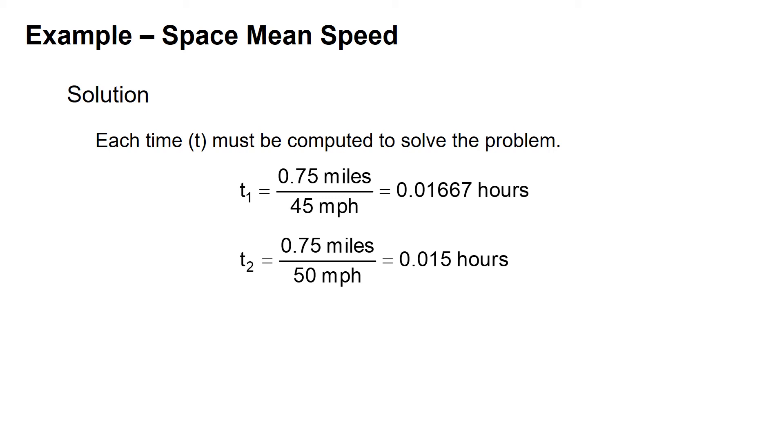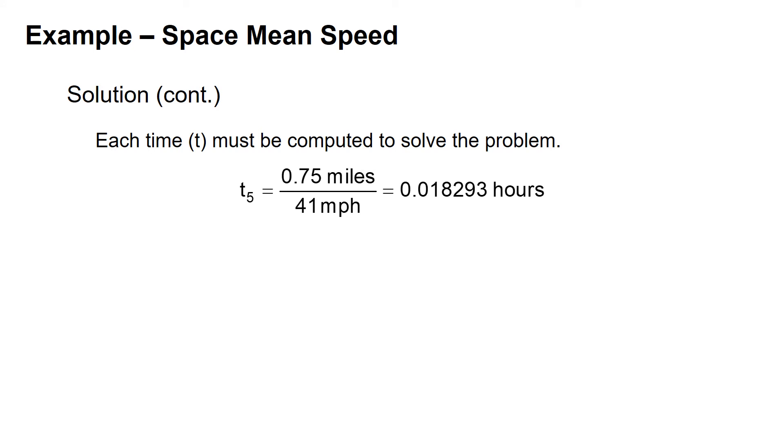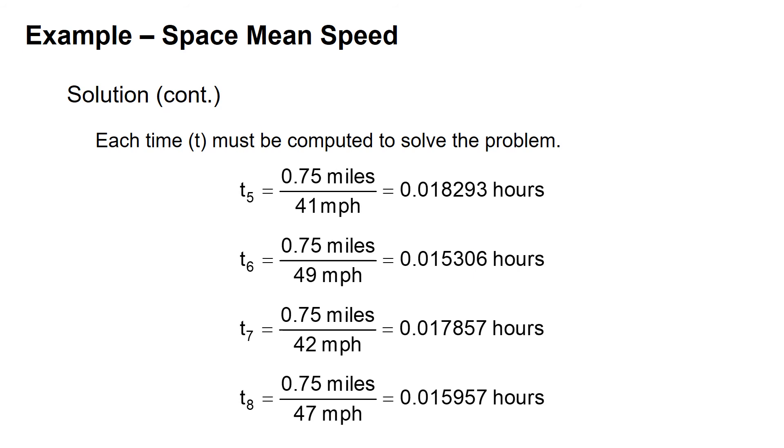Same thing for the next one: T2 is 0.015, T3 is 0.01932 hours, T4 is 0.0159. This takes us to T5, 6, 7, and 8. Those are all the same process; we're just computing the time that it takes, T1 through T8.